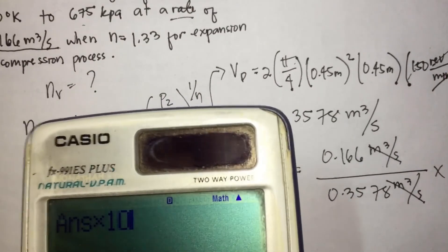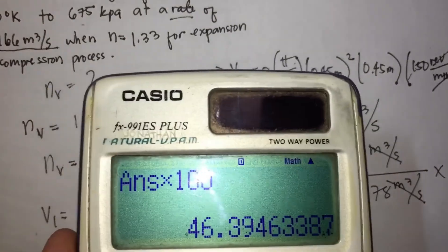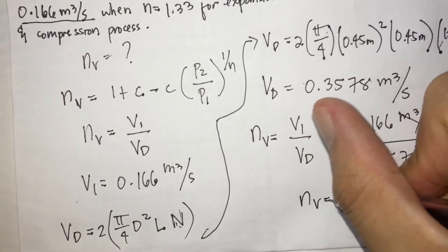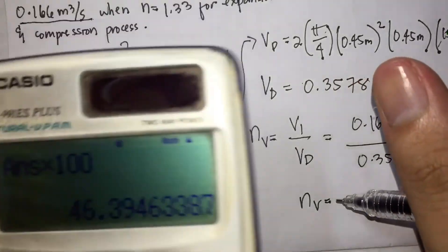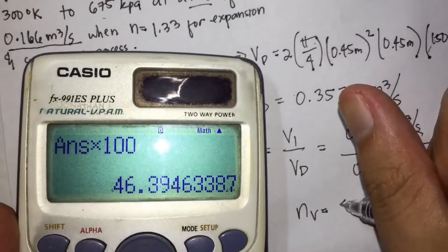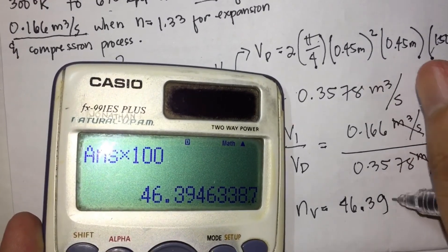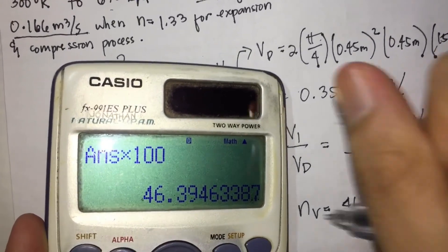Times 100. That is volumetric efficiency is 46.3946 percent.